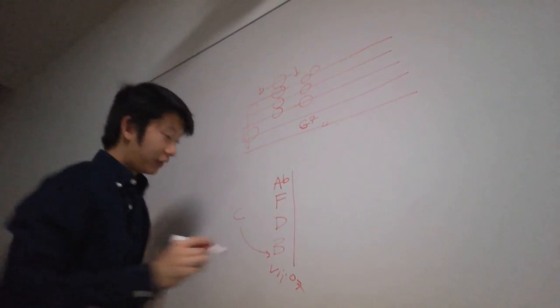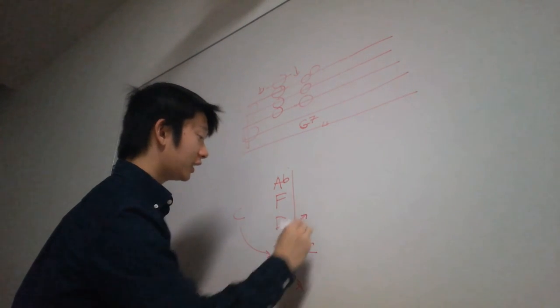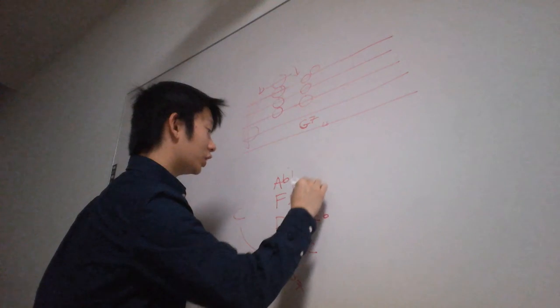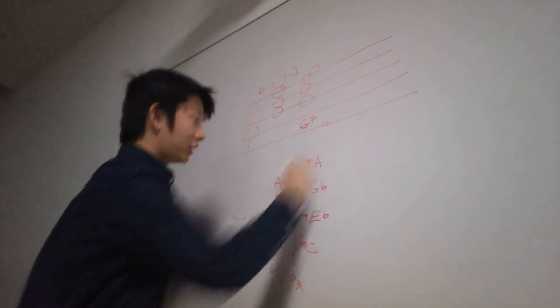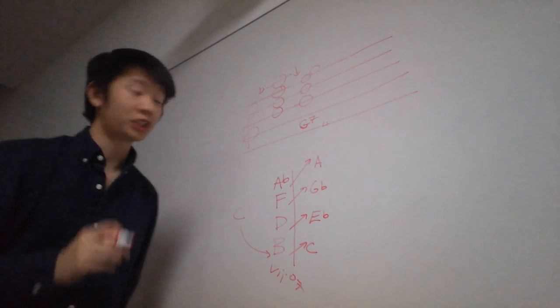Now, B is a leading tone to C. D is a leading tone to E flat. F is a leading tone to G flat. And A flat is a leading tone to A. So these are our new keys that we're going to basically modulate to.